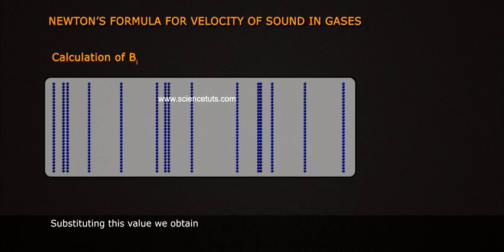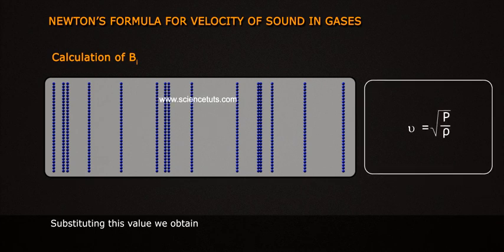Substituting this value, we obtain Newton's formula as: nu equals square root of p by rho.